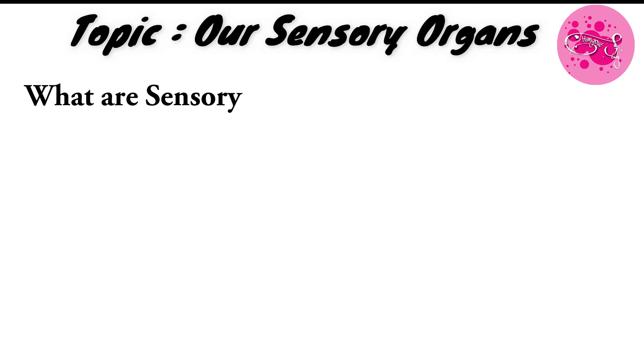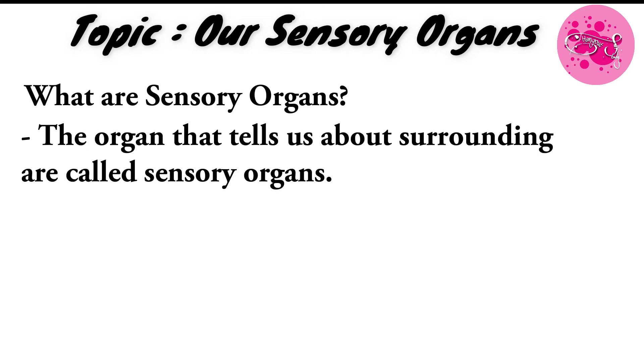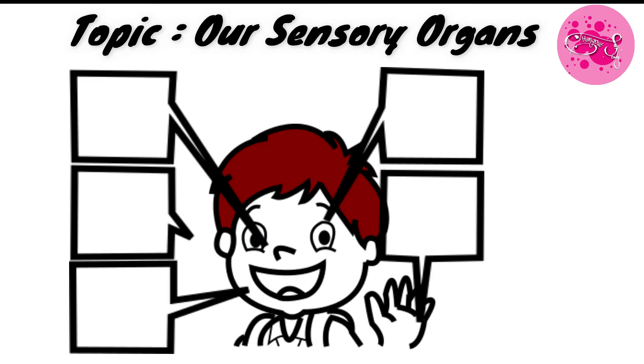What are sensory organs? The organs that tell us about surroundings are called sensory organs. We have a total of five sensory organs: our eyes, ears, nose, tongue, and skin. So now let us study each sensory organ in detail.